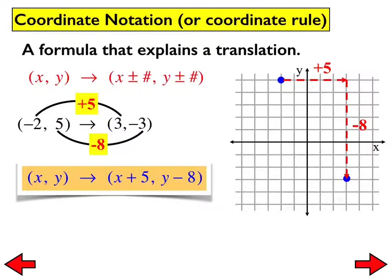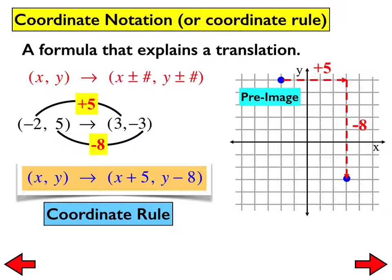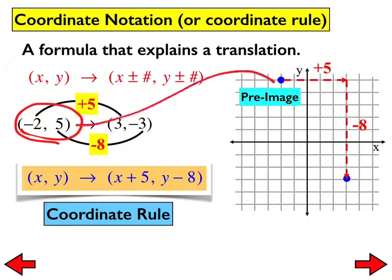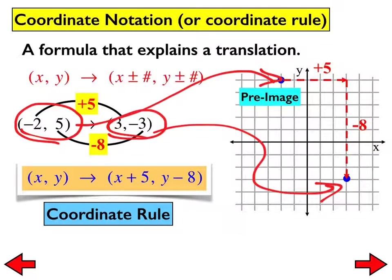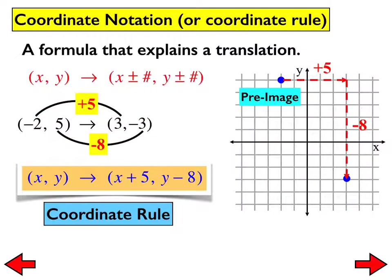The original shape that we start with is always referred to as the pre-image. After we move it, that is referred to as the image. Pre-image is the original shape, or in this case, ordered pair. Image is the shape that results after we move.